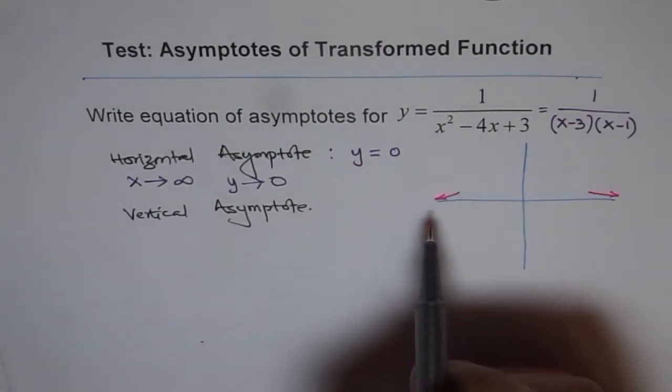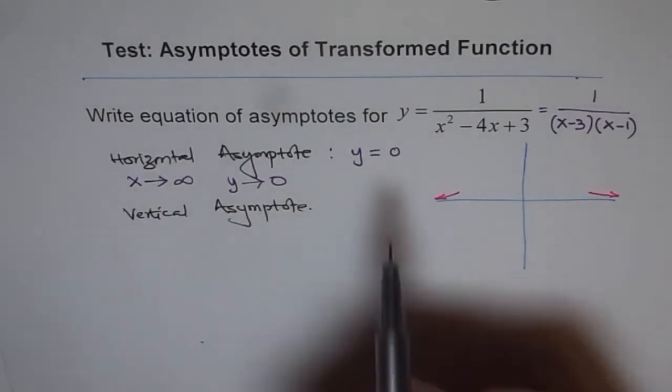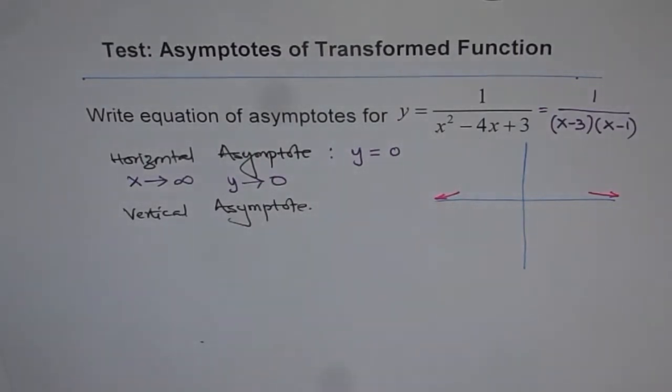In either case, the function approaches 0 but never reaches it. Therefore, the horizontal asymptote is y equals 0.